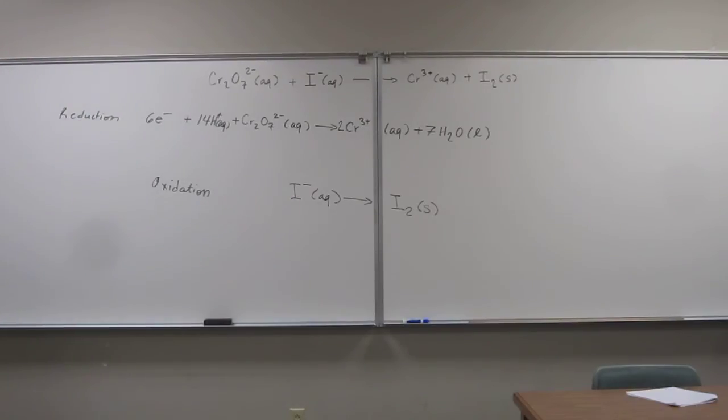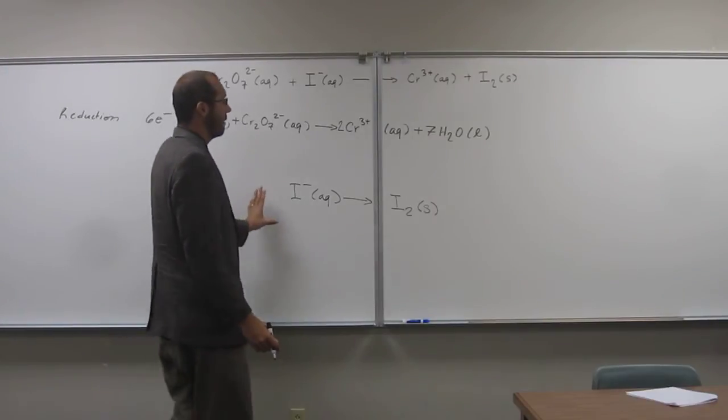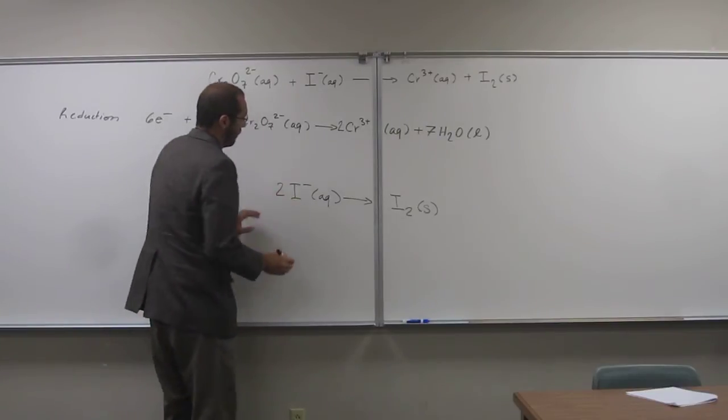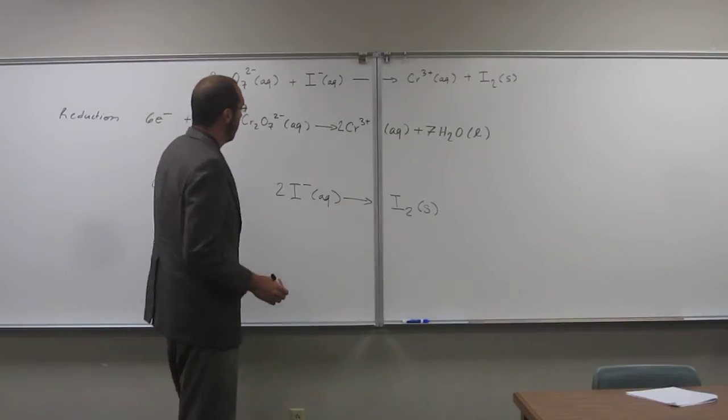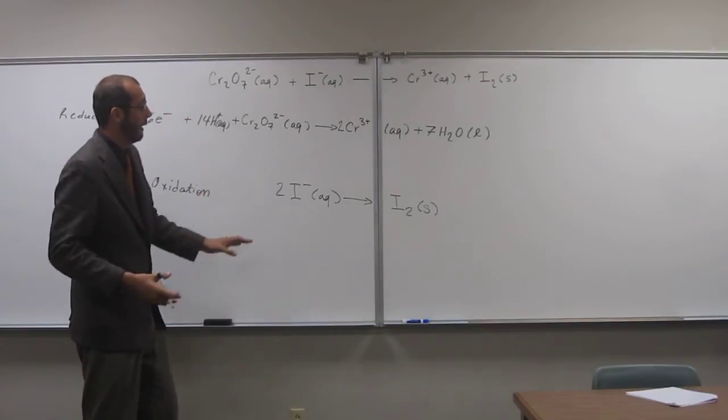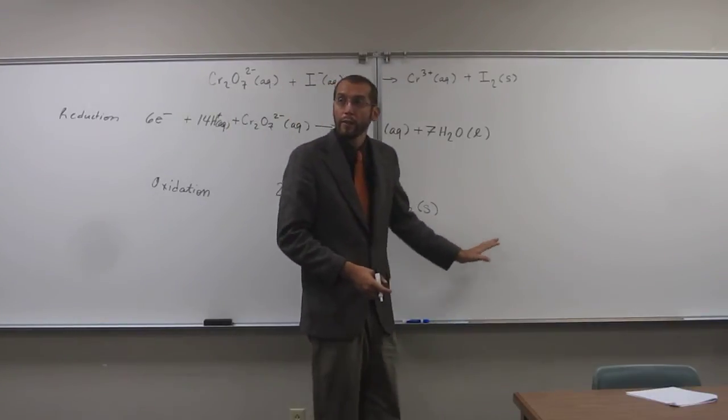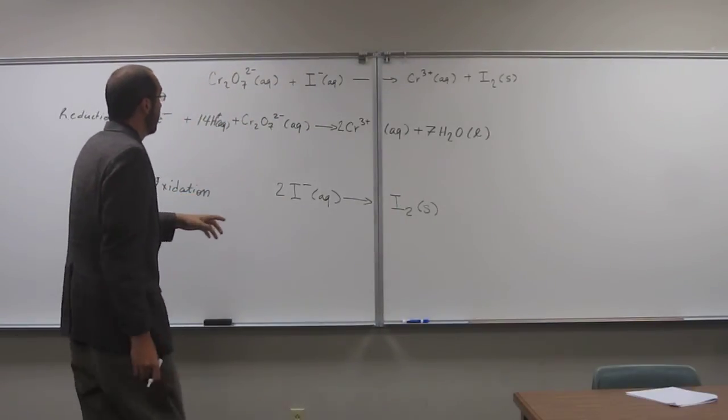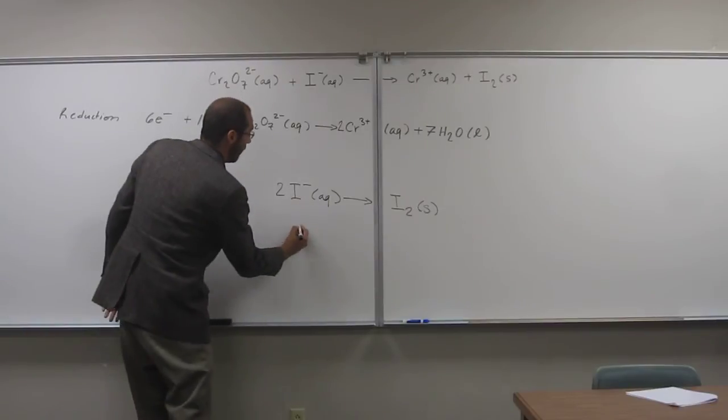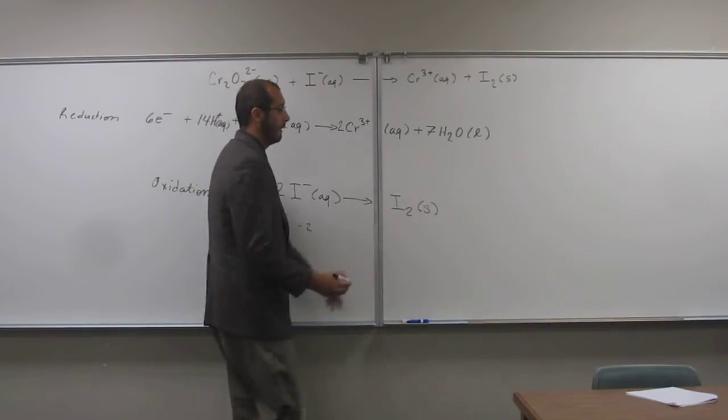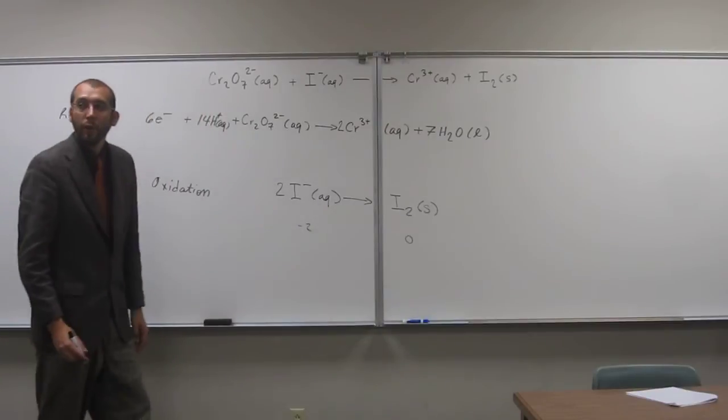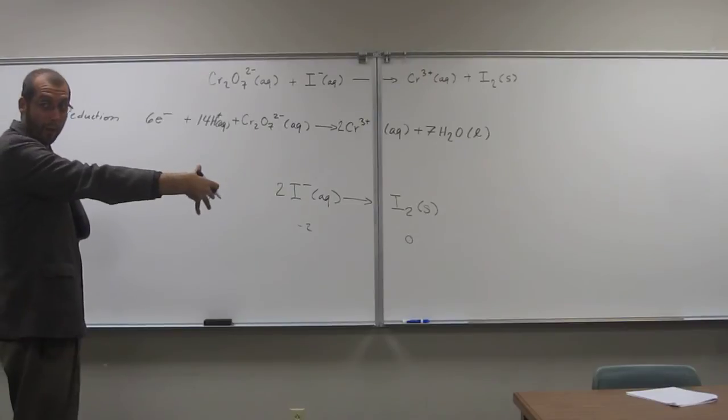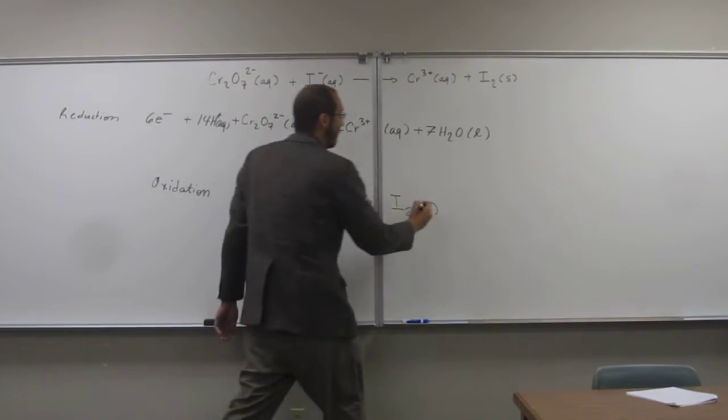So let's do the other one, the oxidation half-reaction. So again, first thing you want to do is balance the non-oxygen atoms. So two to two. And then, well, we didn't have to add any oxygens to either side. So we don't have to do all that balancing stuff. But the one thing we should see is that we've got two negative on this side, and a zero on this side. So remember, the only thing we can add is negative charges. So to the products, we're going to add two electrons.